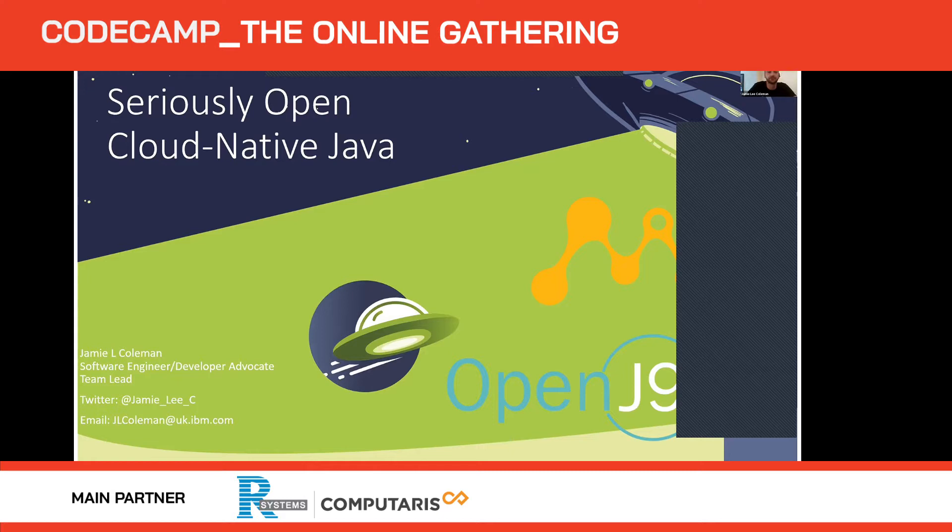I got the offer to become a developer advocate, so since then I've worked mostly with microservices, Kubernetes, Maven, Gradle — all the good stuff. Today I'm going to talk about Seriously Open Cloud Native Java, which is my favorite open source stack for creating microservices. That includes OpenJ9, MicroProfile, and Open Liberty.